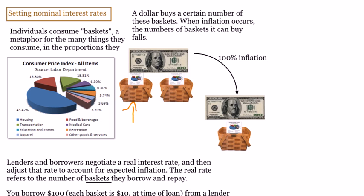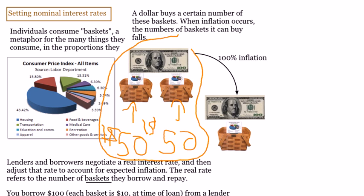Here are two of these metaphorical baskets. And let's just suppose that each basket costs $50 at the current time, which means that if you have a $100 bill, that $100 bill has a purchasing power of two baskets. And let's suppose you lend that $100 to somebody and say just pay me back in a month.